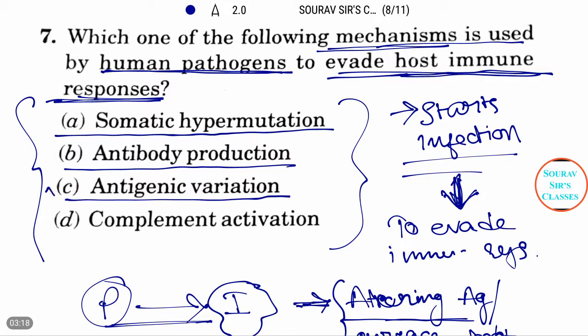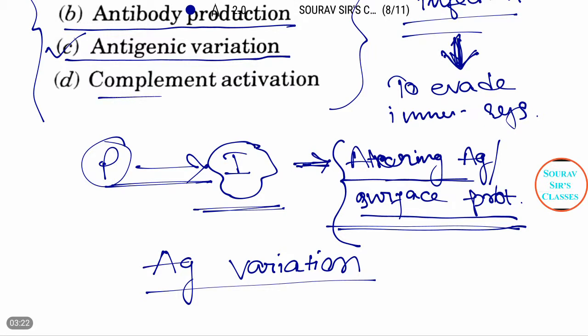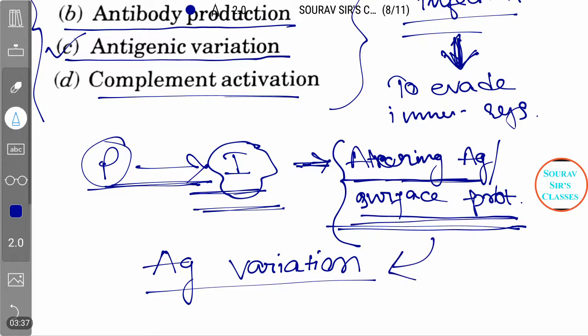C is antigenic variation and that is the answer. And the third one was complement activation, that is also wrong, because when a pathogen evades through our immune system, it alters antigen or surface protein.